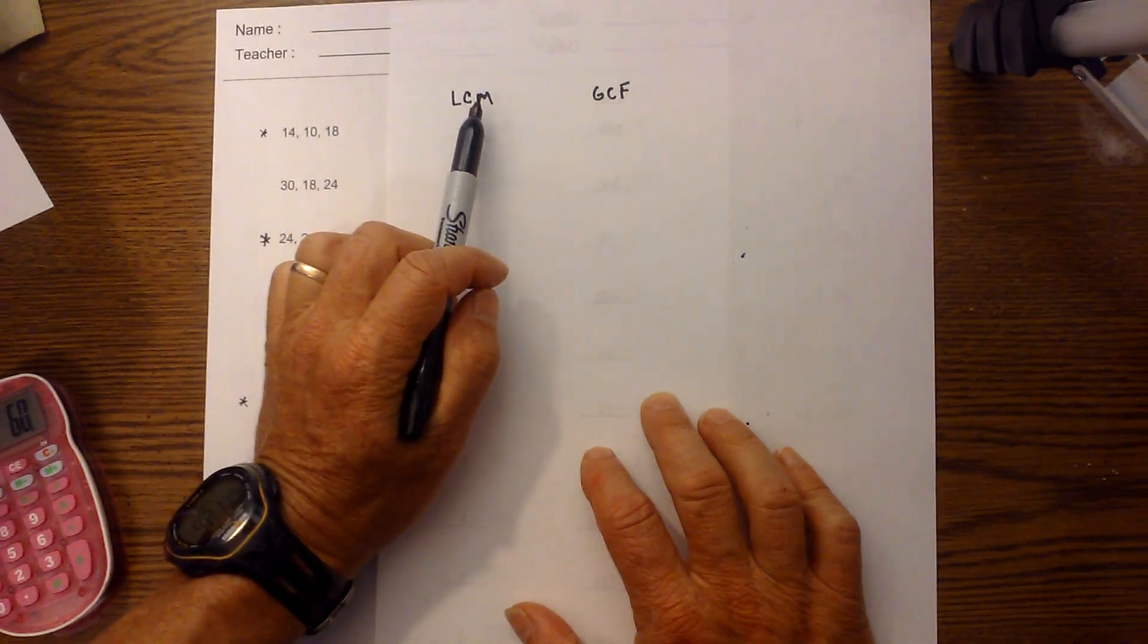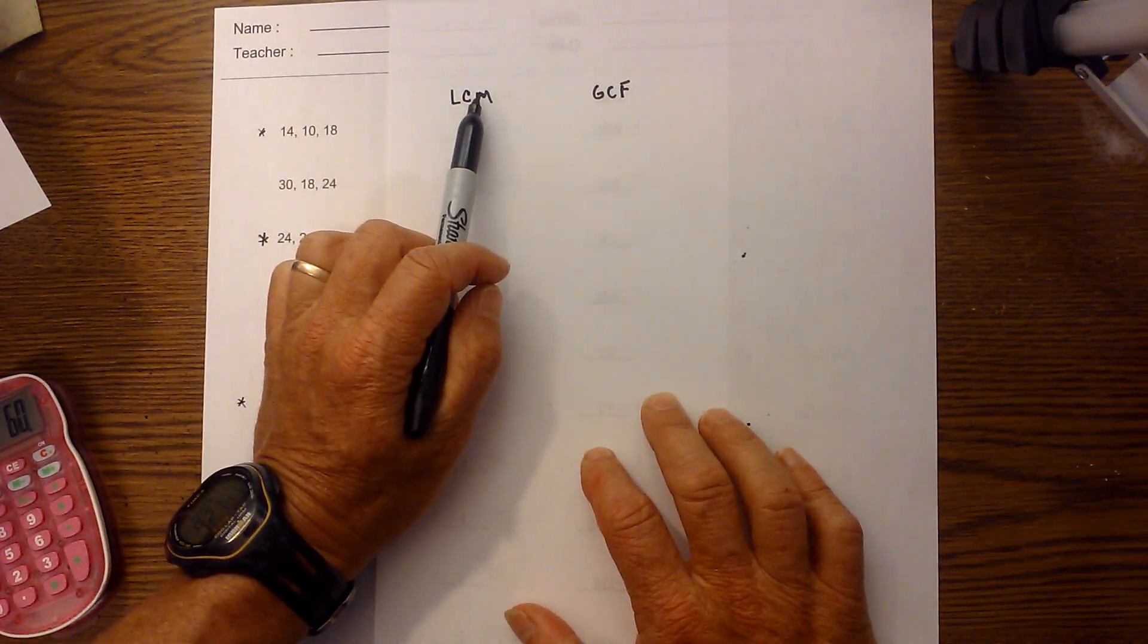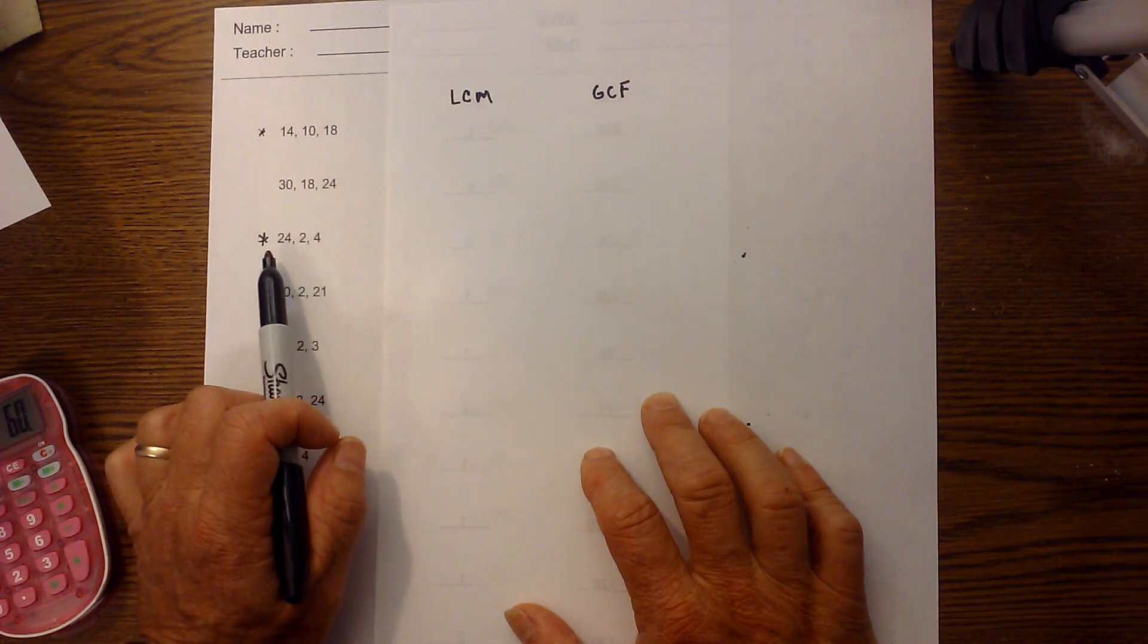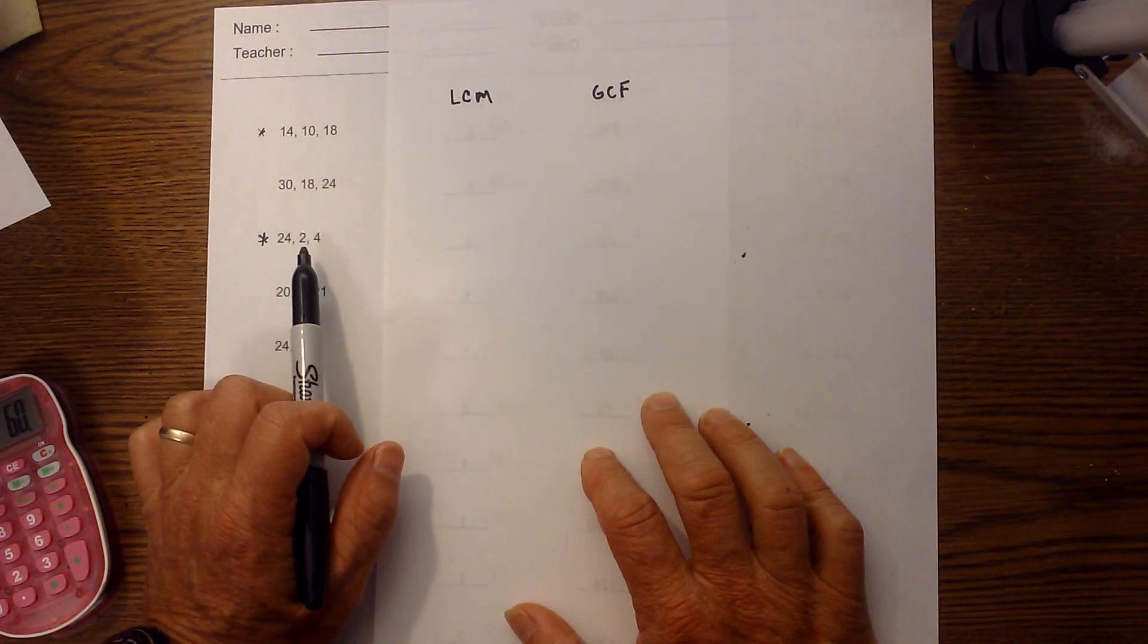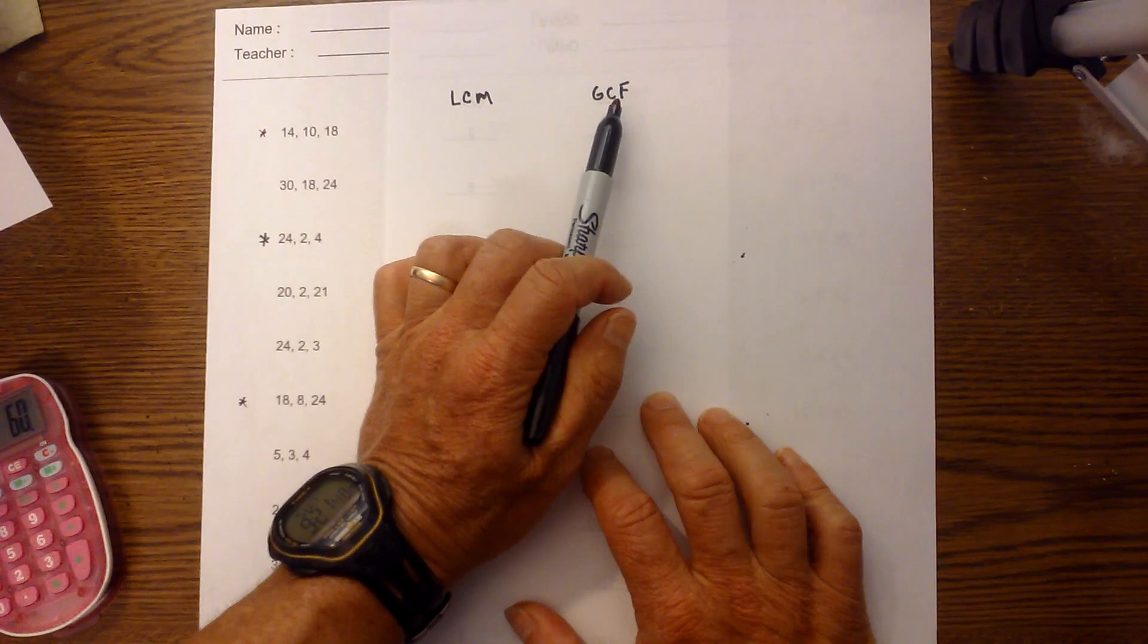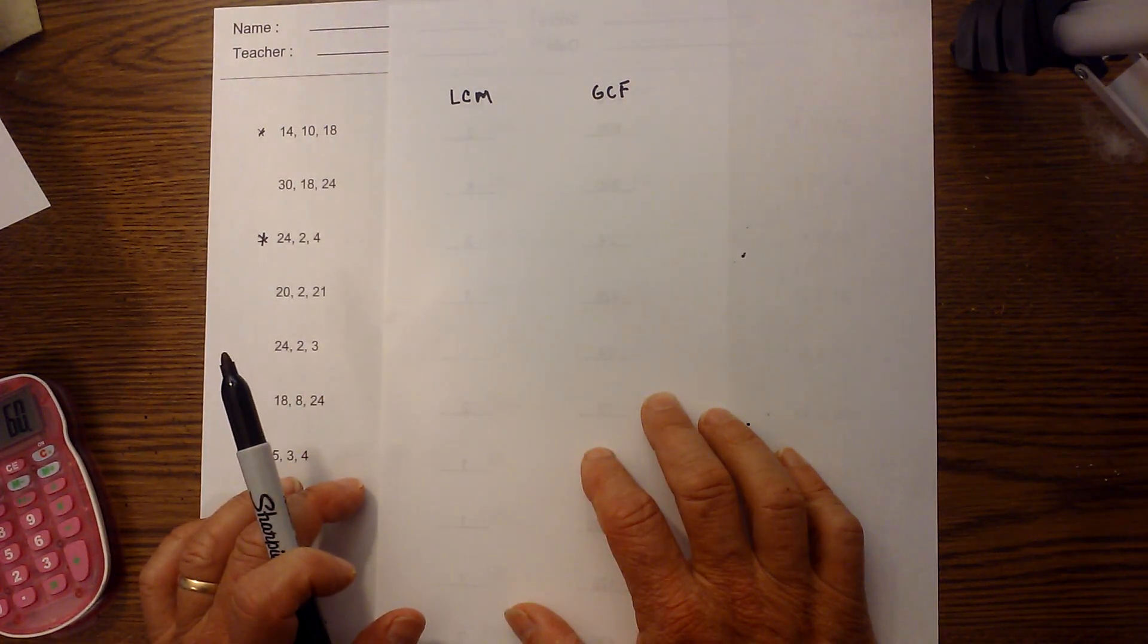The LCM is always a number equal to or larger than the numbers in the set you're looking for. The greatest common factor is always equal to or smaller than the numbers in your set.